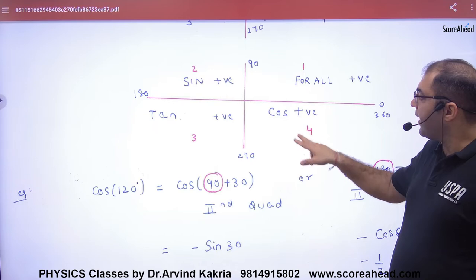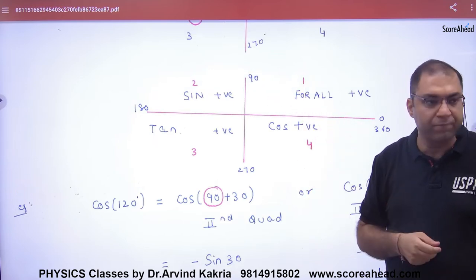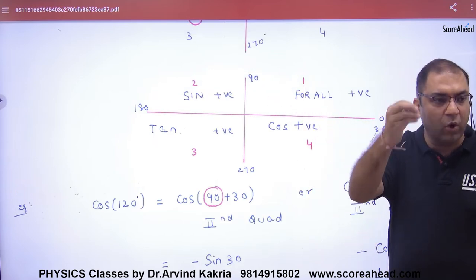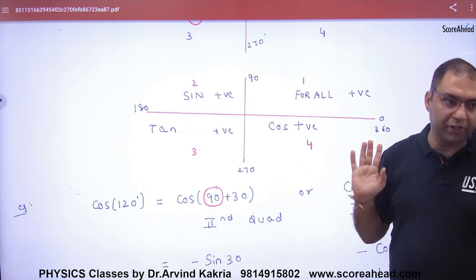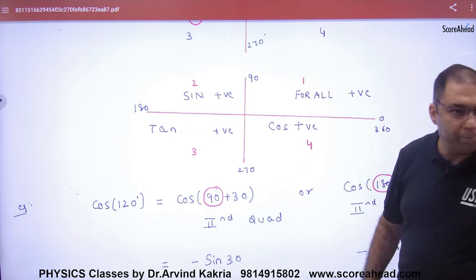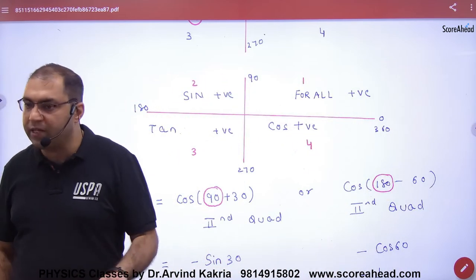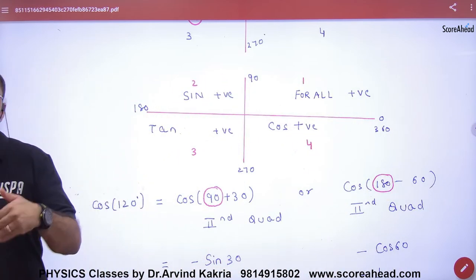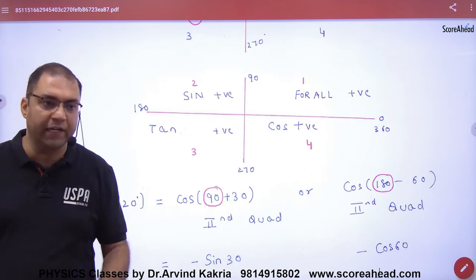And if you have an angle between 0 and 90 — like 60 degrees — then sin, cos, and tan are all positive. So the coordinates tell you whether the final answer will be positive or negative.